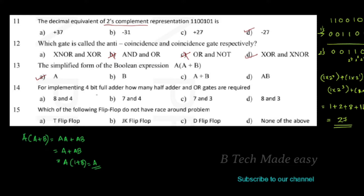Next question: for implementing a 4-bit full adder, how many half adders and OR gates are required? The options include 8 half adders with 4 OR gates, 7 half adders with 4 OR gates, etc. The correct answer is option A: 8 half adders and 4 OR gates are required to implement a 4-bit full adder.